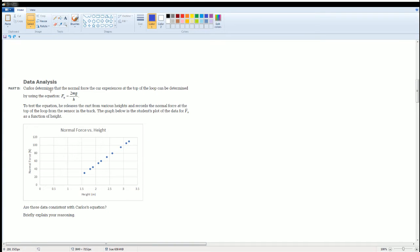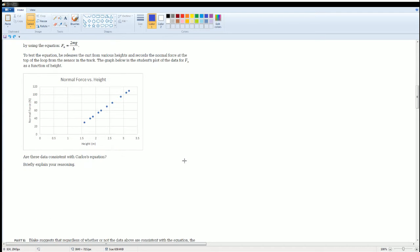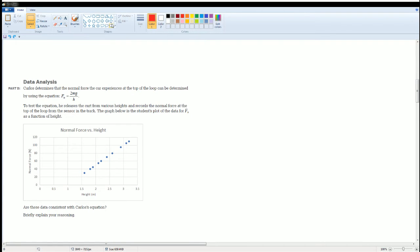Next, you want to look at this and you want to explain what is wrong with Carlos's equation based on this graph. But first, they asked you to draw a line of best fit. A line of best fit should look like a straight line. Does this work? Nope. When you draw a line of best fit, you have to make sure that there are equal amount of points above and below the line. So it should look something like this.